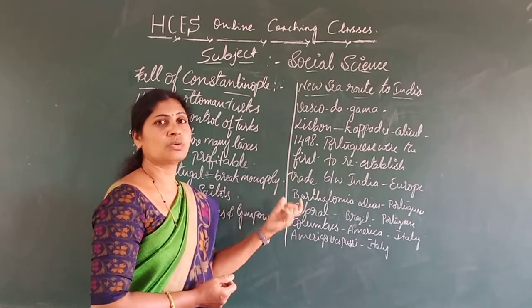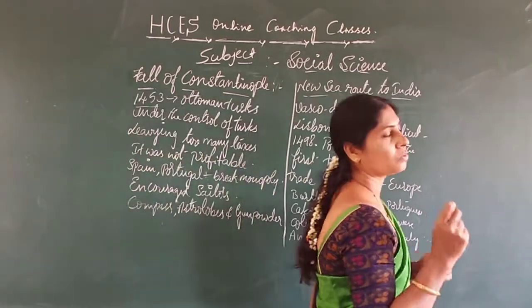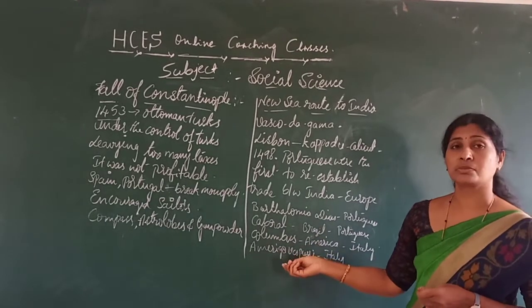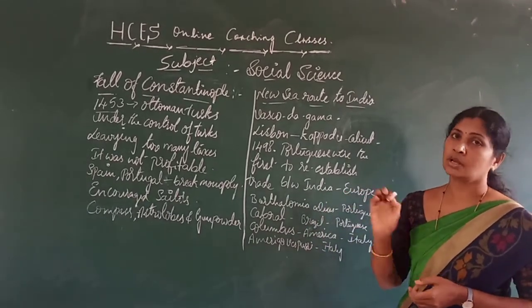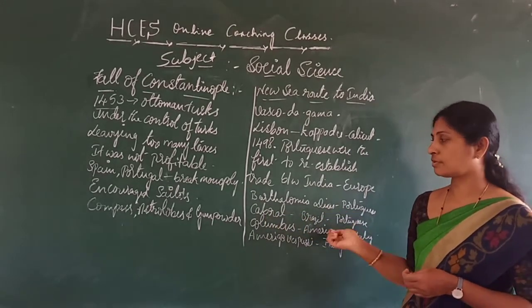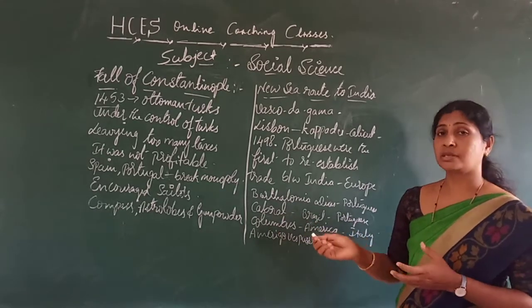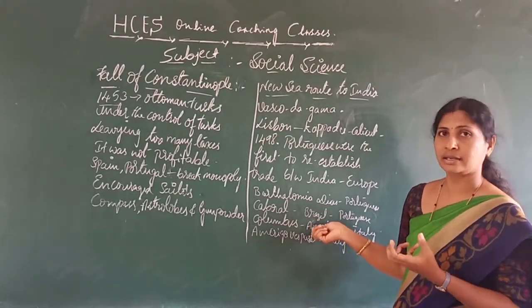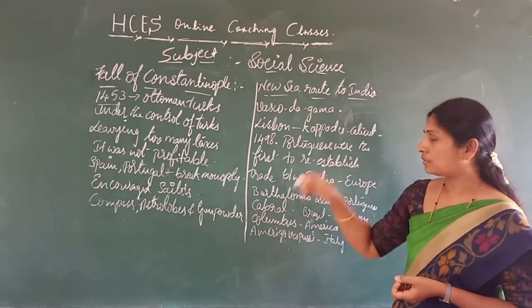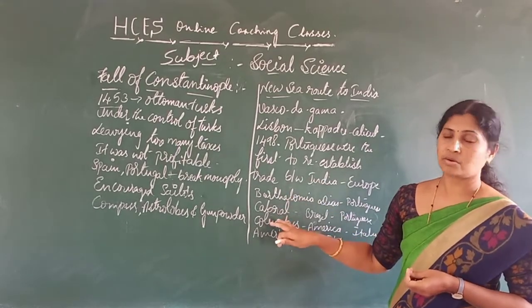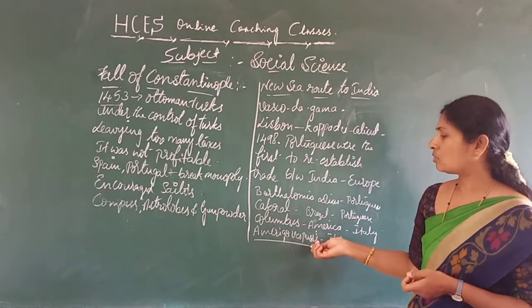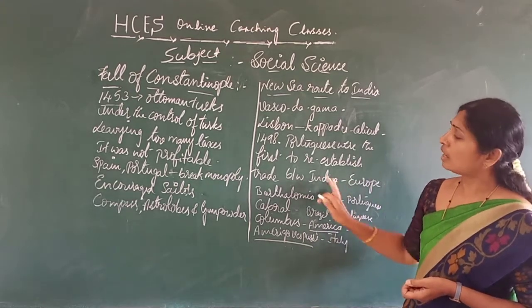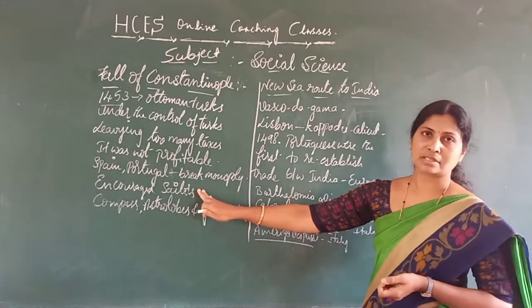One thing we should understand — the Portuguese were the first to enter India and at the same time the last to leave India. Vasco da Gama, Bartholomeu Dias, and other sailors like Cabral and Columbus made their own discoveries and found new lands. Cabral, also Portuguese, found Brazil. Columbus found America — actually, Columbus thought the new land he found was India, so he called the people there 'Red Indians.' But after many years he came to know it was not India. Later, when Amerigo Vespucci explored the same land, it was named America after him.